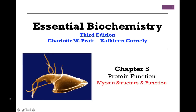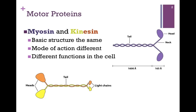We're continuing our studies of examples of protein structure and function. In this lesson we want to look at the first of our motor proteins, myosin. We'll look at the two motor proteins myosin and kinesin. Myosin is pictured here in purple on the upper right and kinesin in yellow and orange in the lower left. Their basic structure is the same, yet there are some differences that relate to the difference in their mode of action or mechanisms, and those in turn relate to their different biological functions.